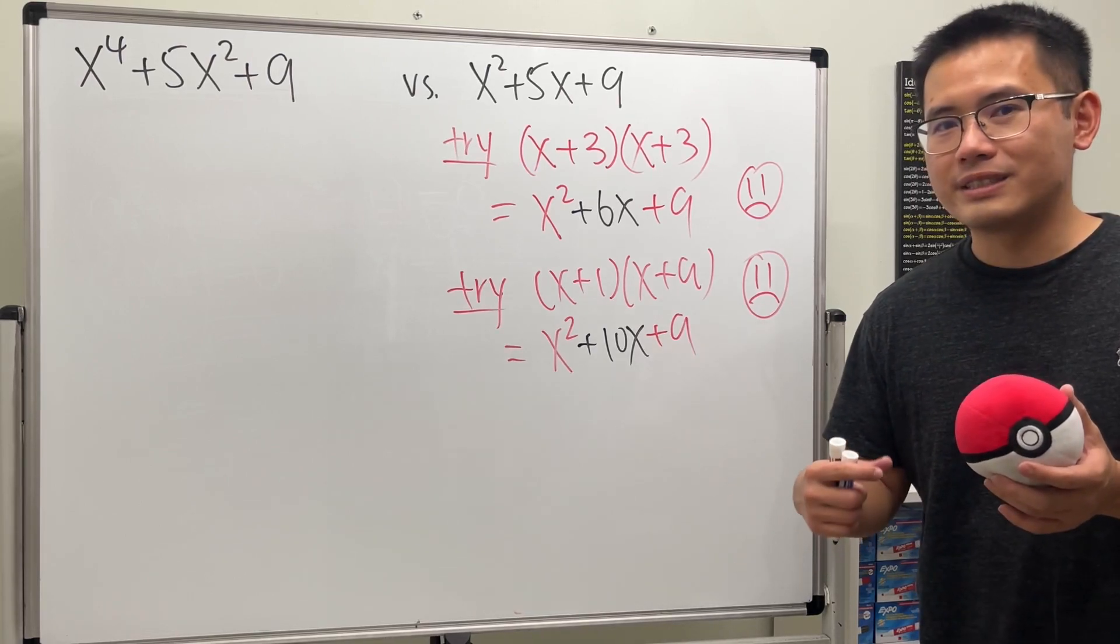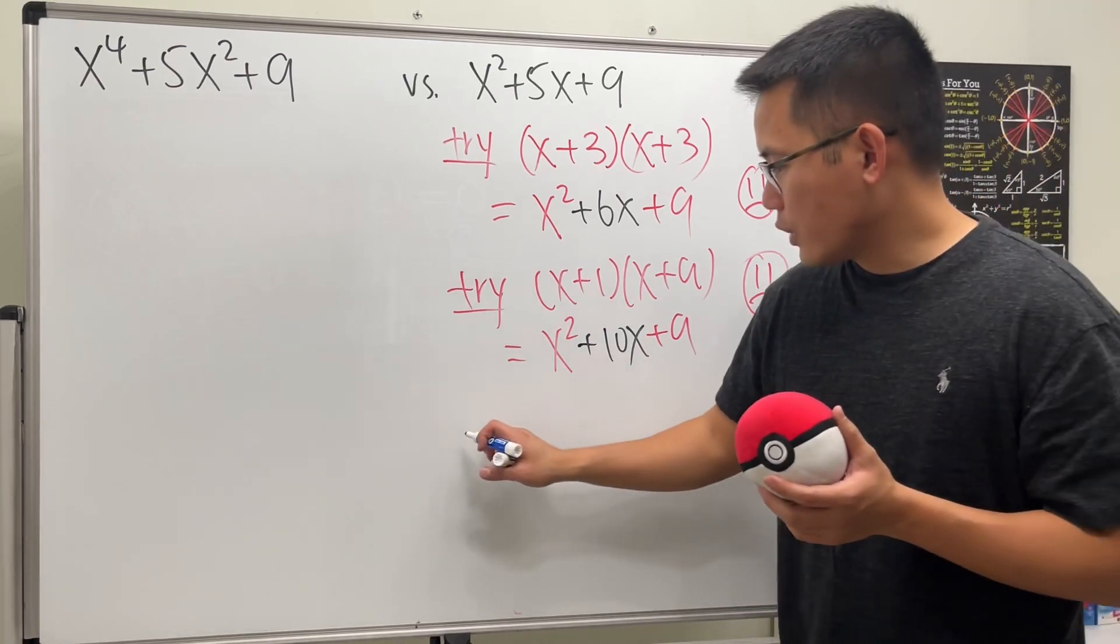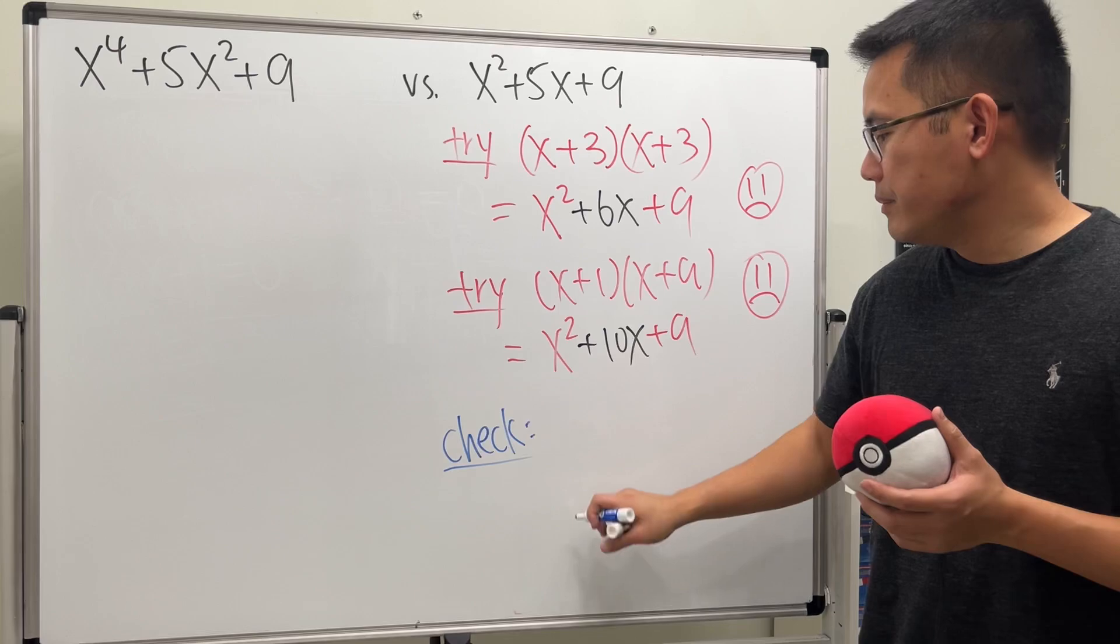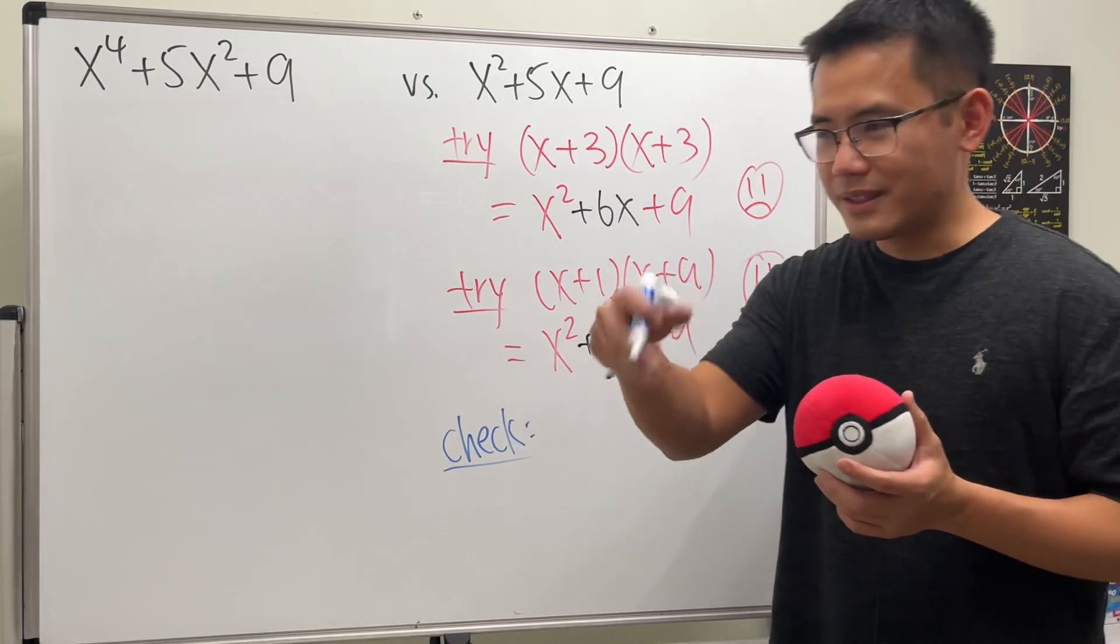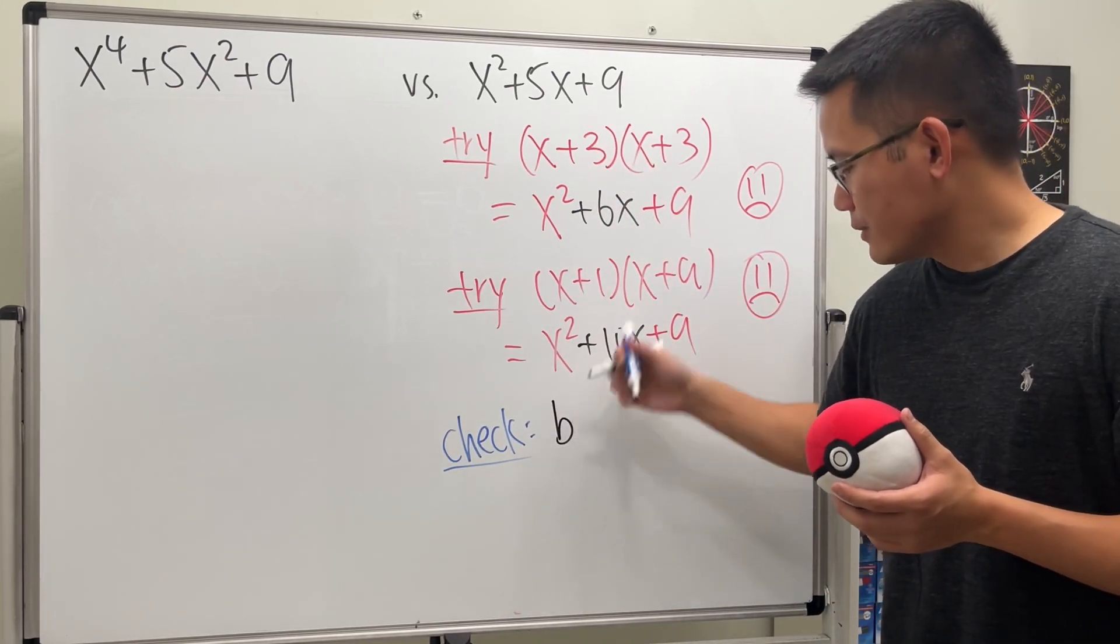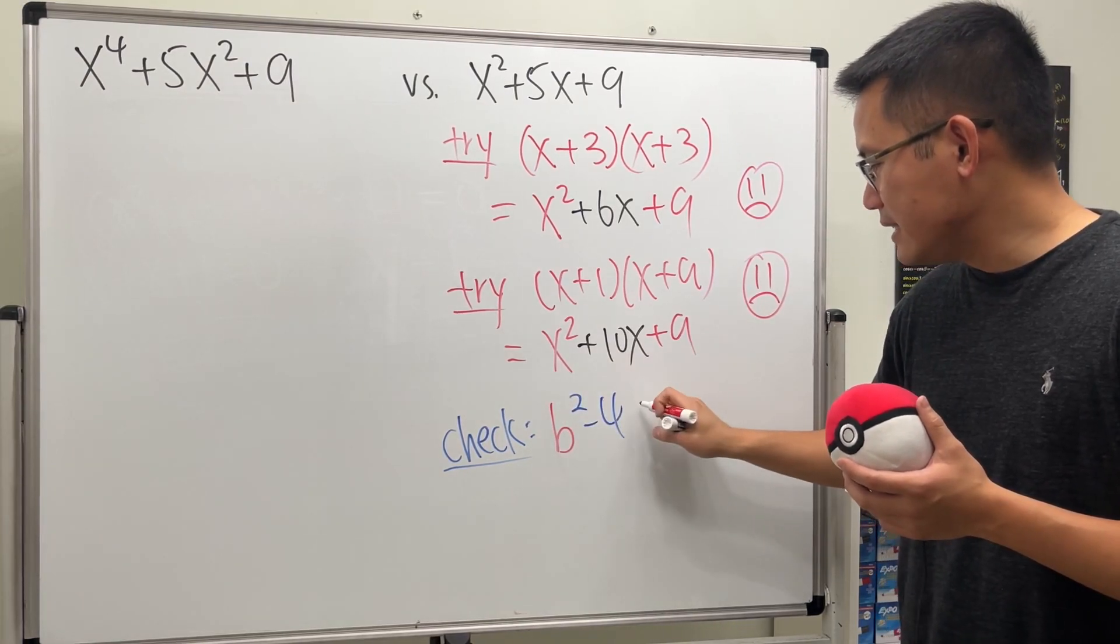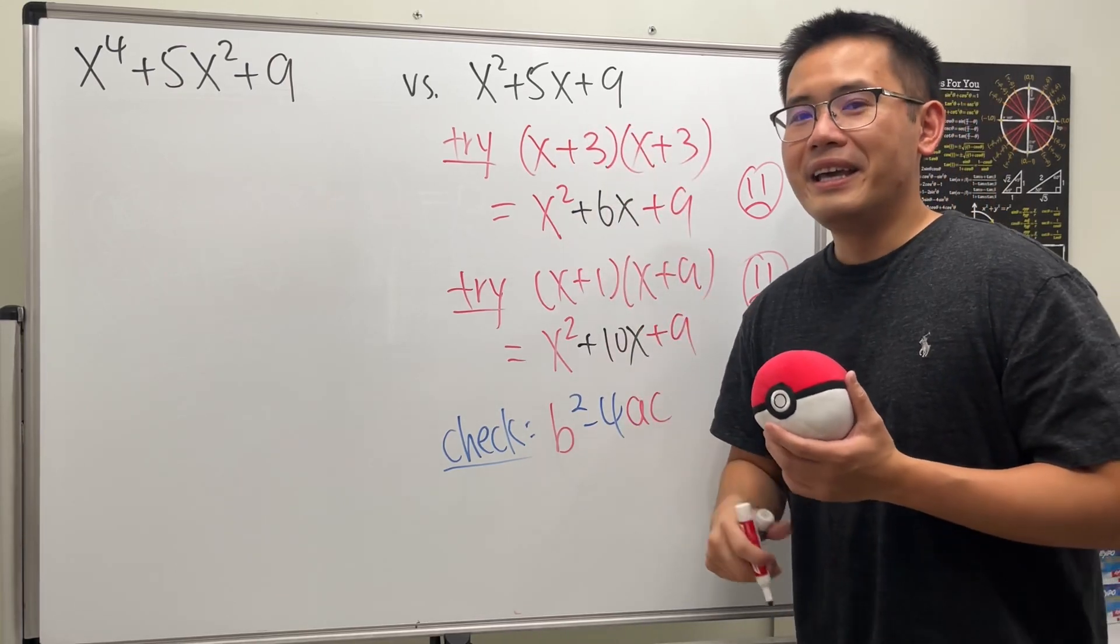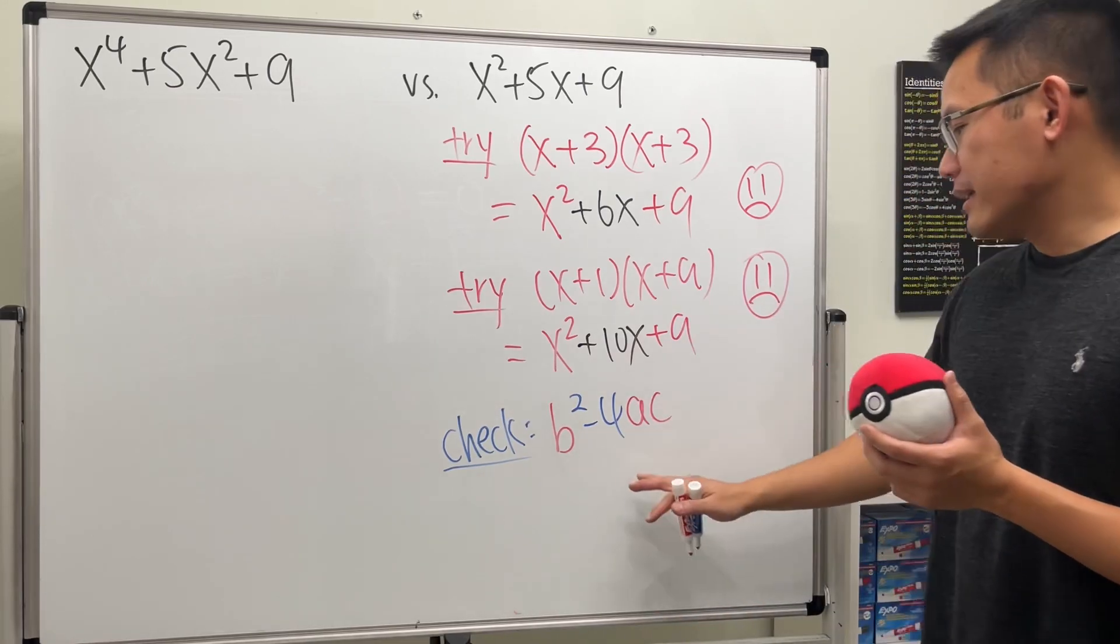However, though, we cannot just say hey we tried it and it didn't work so that's why it's not factorable with real numbers. Technically what we can do is the following: we should check the so-called discriminant, meaning the inside of the quadratic formula, the square root. So just go ahead and compute b squared minus 4ac.